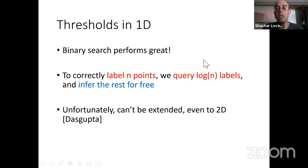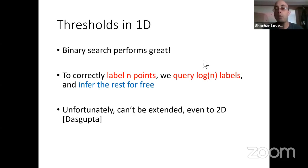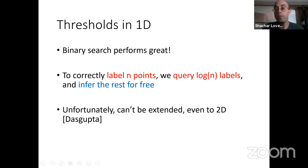Can we extend binary search to more interesting settings? The answer is, to some extent, no. Even in two dimensions you cannot do that. Let me show you why learning half-planes in two dimensions fails. You get points in two dimensions and there's an unknown green line — everything above it is minus one, everything below is plus one. The question is: can you make a few label queries and infer the rest for free?